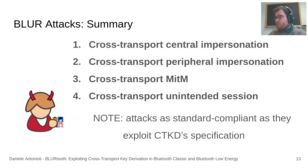This slide summarizes our four cross-transport BLUR attacks. By mounting central and peripheral impersonation attacks, Charlie can present as a trusted device to an arbitrary victim on both BT and BLE, take over connections from the impersonated victim, and perform malicious actions including reading sensitive data and sending malicious commands. Similar effects are reached by the cross-transport machine-in-the-middle attack. With the unintended session attacks, Charlie becomes a trusted anonymous device on both BT and BLE without breaking existing security bonds, enabling anonymous access to protected Bluetooth services. Since the attacks target flaws in the Bluetooth standard, they are effective on all devices implementing CTKD, including smartphones, laptops, tablets, and smartwatches.